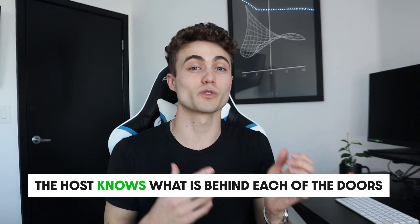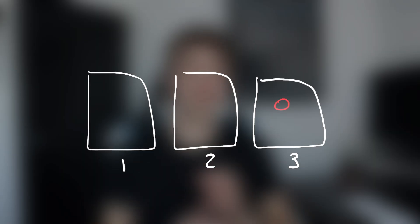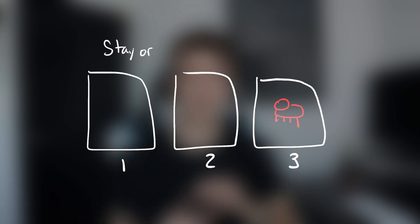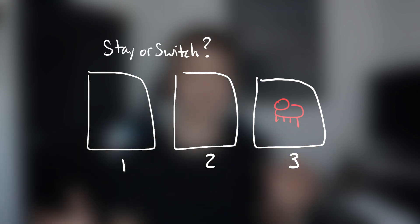The reason why this problem has confused so many people, and myself included, is because the game show host knows what's behind each of the doors and that messes with all of the probabilities. The game show host will always open a door that contains a goat every time, but if you were to randomly open the doors then it would be completely different and it wouldn't matter if you switch or not.